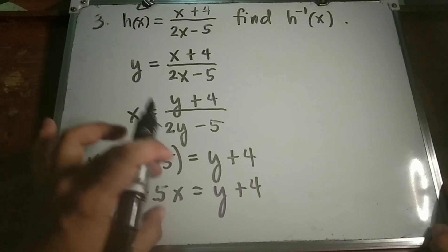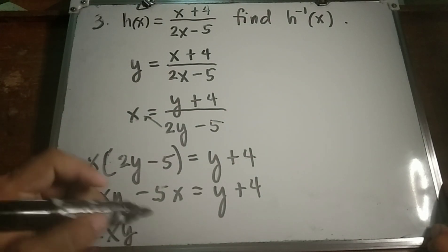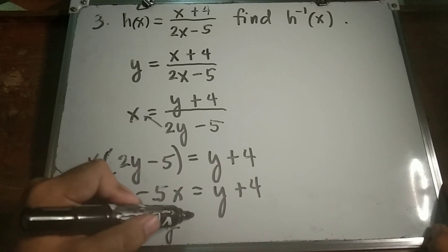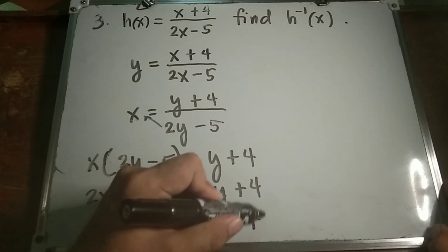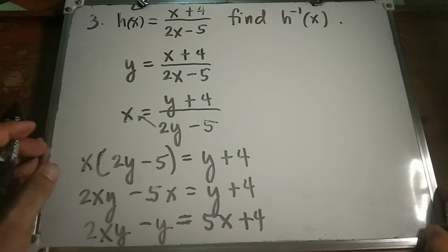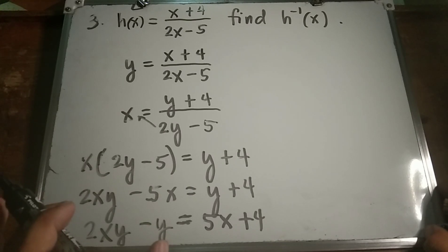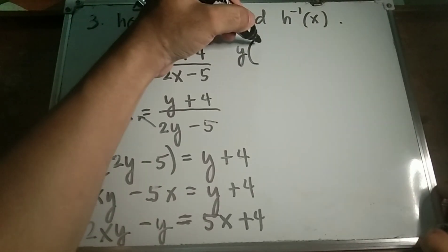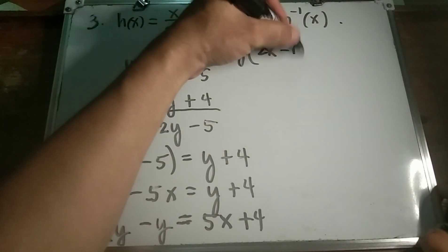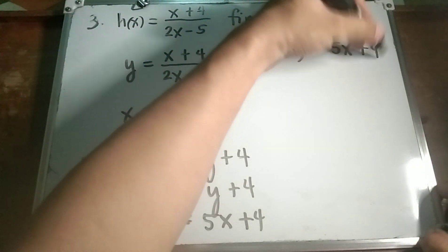Move negative 5x to the right side and isolate the y terms. So 2xy minus y equals 5x plus 4. We have y terms on the left side with a common factor of y, so now factor out y: y times 2x minus 1 equals 5x plus 4.